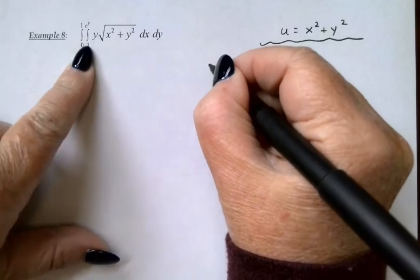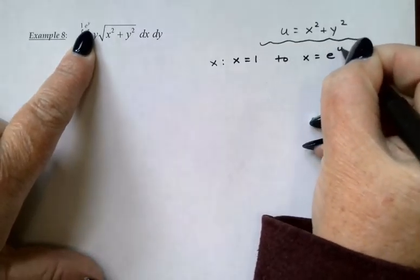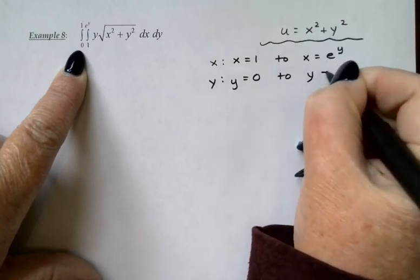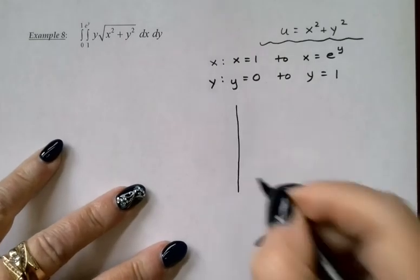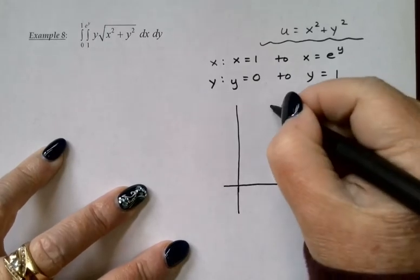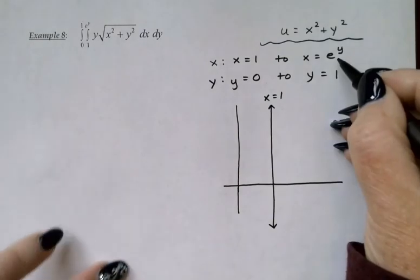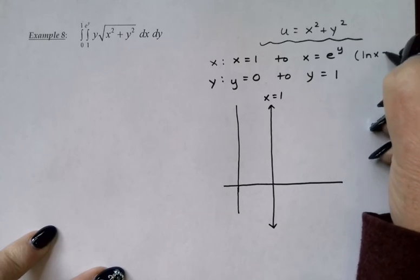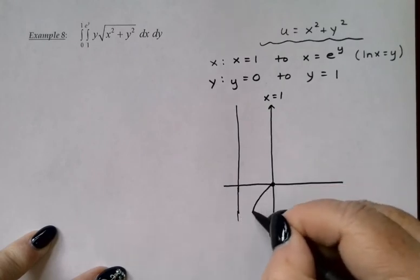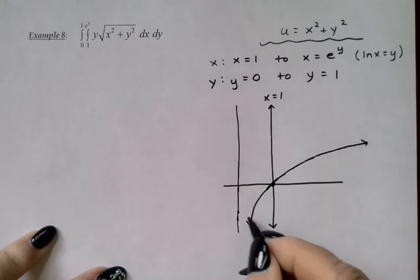This was listed as x first. So my x limits of integration tell me I'm going from x equals 1 to x equals e to the y. And my y limits tell me I'm going from y equals 0 to y equals 1. Alright, let's see. x equals 1, of course, is just a vertical line. And x equals e to the y is the same as y equals lnx. I know how to draw that. That actually has an x intercept of 1. And then it kind of goes down vertical asymptote on the x-axis. And then it kind of comes up slowly. I'm sorry, vertical asymptote on the y-axis. I said that backwards.